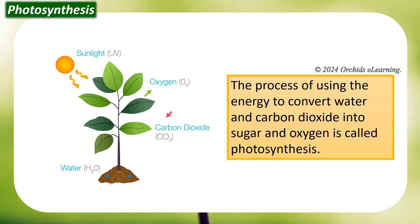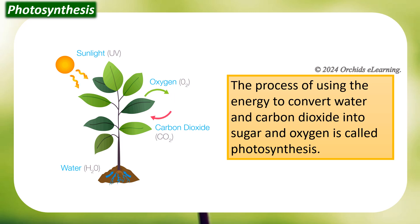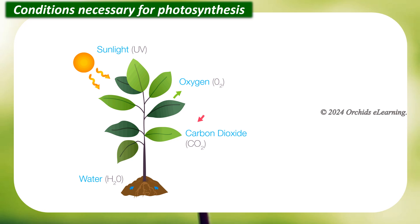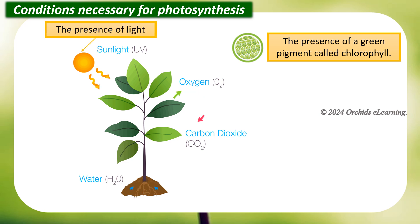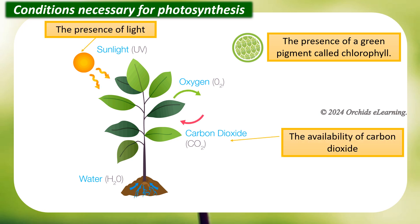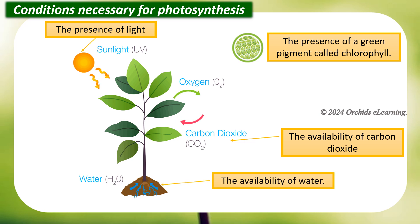We can define photosynthesis as the process of using energy to convert water and carbon dioxide into sugar and oxygen. The general conditions necessary for photosynthesis are: the presence of a green pigment called chlorophyll, the presence of light, the availability of carbon dioxide, and the availability of water.